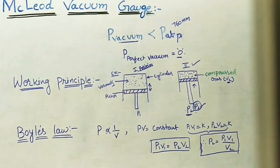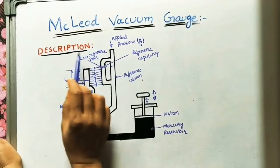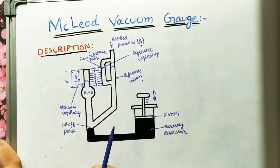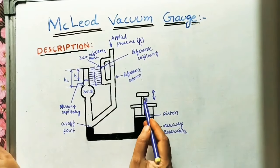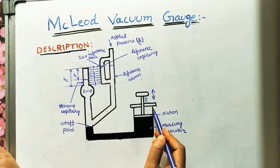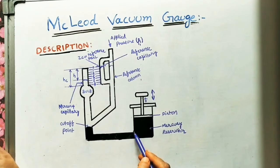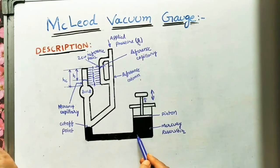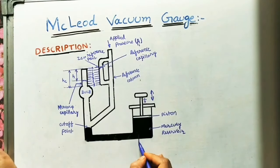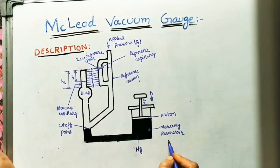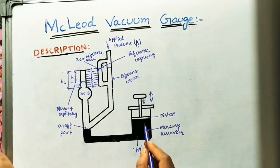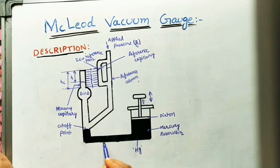Now let us see the description of the McLeod vacuum gauge. Here we are using one plunger or piston and one cylinder. Inside the cylinder we have mercury — it is called the mercury reservoir.